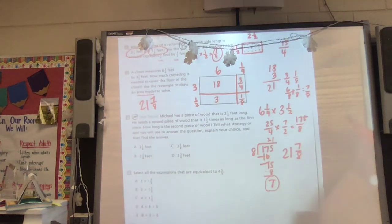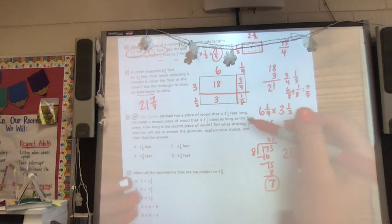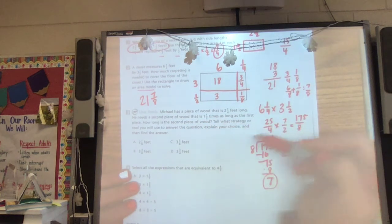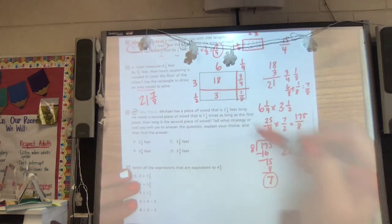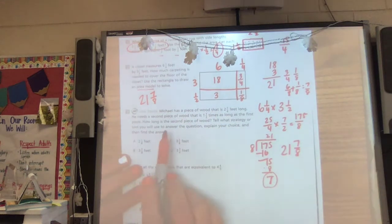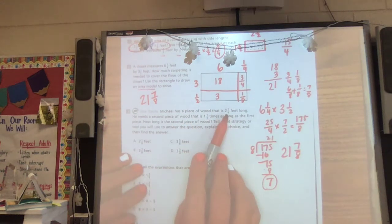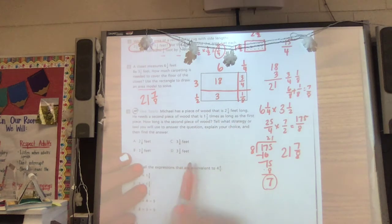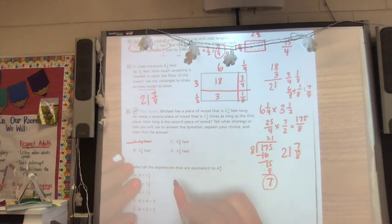Number three. Michael has a piece of wood that is two and a fourth feet long. He needs a second that's one and a half times as long. How long is the second piece of wood? So I have two and a fourth and I know I'm finding one and a half times that size. So I know my answer is going to be larger. So I'm going to go ahead and mark out A. A doesn't make sense. That's less than what I had. An eighth is less than a fourth.